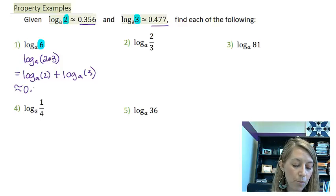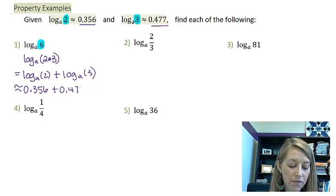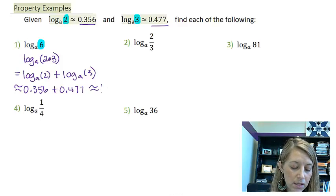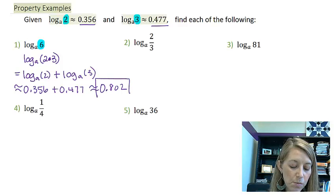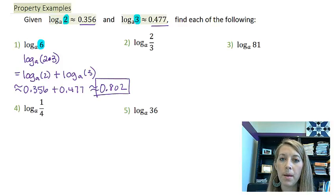I know approximately what each of these are. So this is approximately 0.356 plus 0.477. So all we need to do is figure out what that is. So 0.356 plus 0.477 is 0.802. And so that gives me the answer to number one.